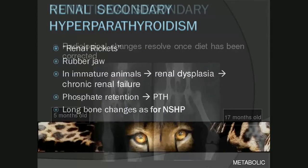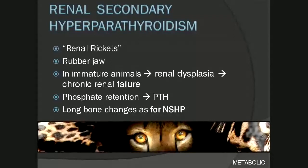The next condition is renal secondary hyperparathyroidism, also referred to as renal rickets or rubber jaw. In immature animals it's often the result of renal dysplasia leading to chronic renal failure, or in older animals it can be due to chronic renal disease of any underlying cause. In both cases, phosphate is retained by the kidney; hyperphosphatemia results in a reciprocal hypocalcemia, which is the stimulus for parathyroid hormone release, resulting in resorption of calcium from the bone. Long bone changes are similar to nutritional secondary hyperparathyroidism.